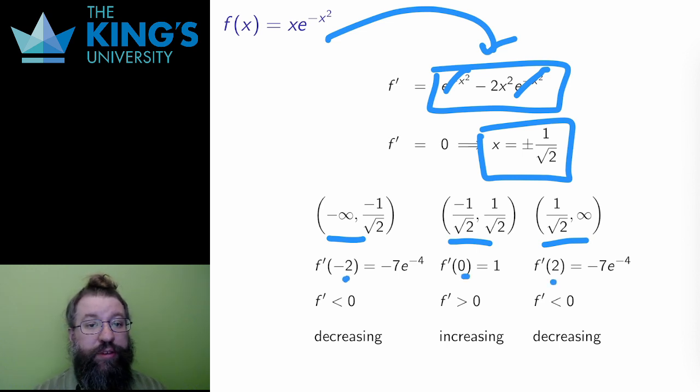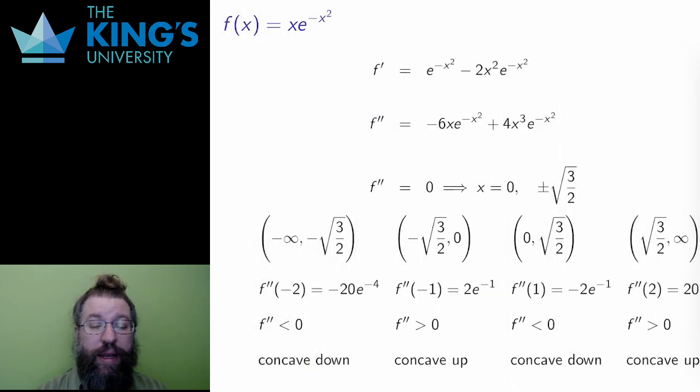I put those three points into the derivative, which is at the top of the slide here. Therefore, the result is negative for 2 and negative 2, and positive for 0. Therefore, the function is decreasing on the first and third intervals, and increasing on the middle one. That means there is a minimum at x equals negative 1 over root 2, and a maximum at x equals 1 over positive root 2.